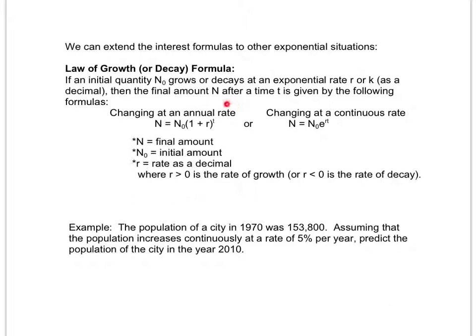So we either have an annual interest rate, notice this is very similar to a equals p times 1 plus r over n to the n times t, where since it's an annual rate, our n is 1, therefore we can just say r and t, or a continuous rate. So this is very similar to p times e to the rt. So the only difference is, instead of p, I'm using n sub zero, my initial amount. And instead of a, I'm using n, which is my final amount.